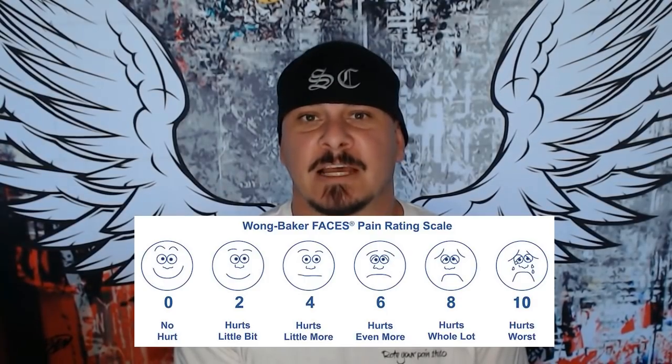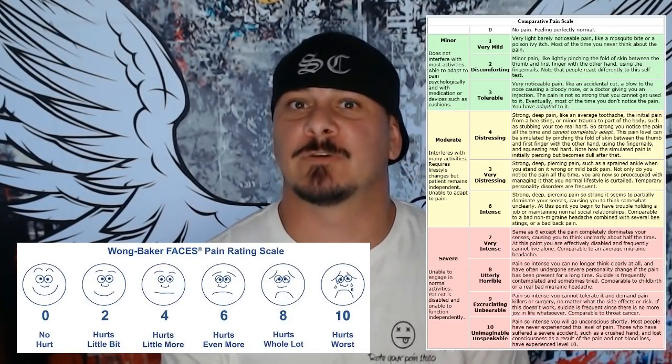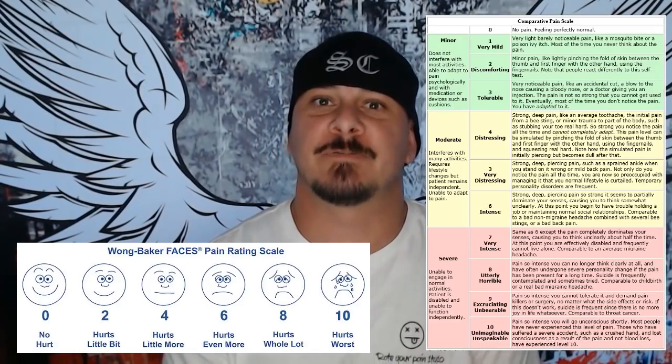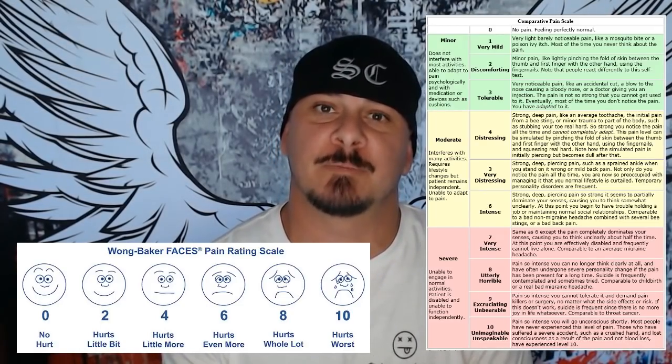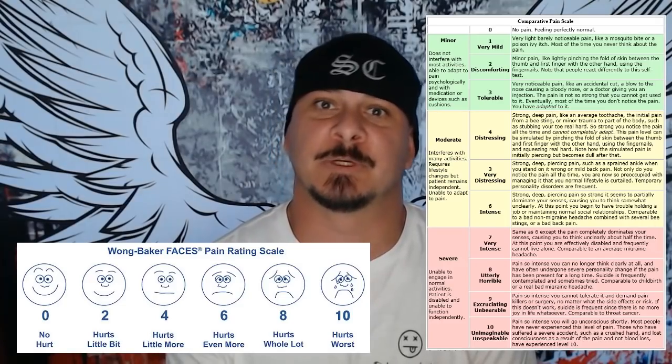There are many pain scales out there today that basically all work in a similar manner. Some are created to be more patient friendly, such as the Wong Baker scale, which is simple by design and easily defines each level of pain. While others like the McGill pain scale are more complex and geared towards physicians and patients with more serious conditions. The two most commonly used are the Wong Baker pain scale and the Stanford pain scale. I will be giving the definitions of each level according to the Stanford pain scale, as well as showing each of the five faces in the Wong Baker pain scale as we go along.